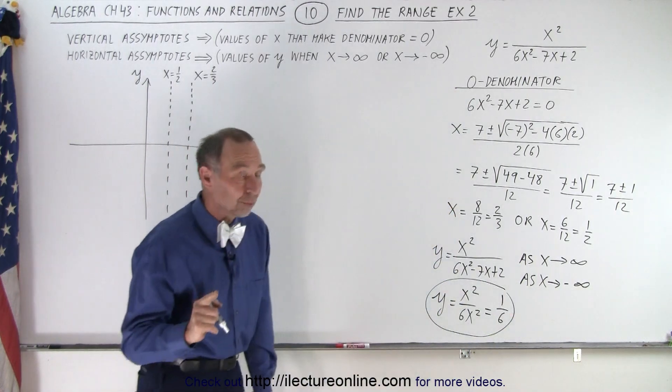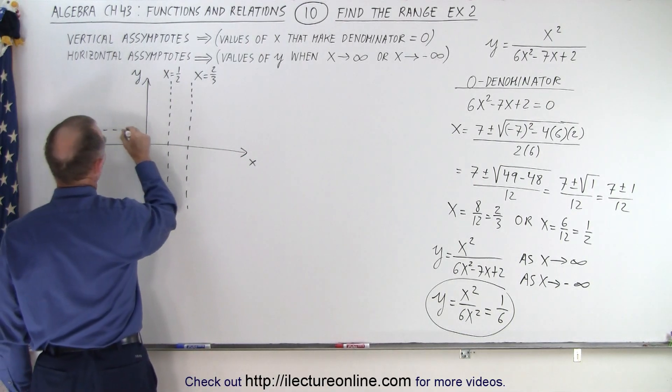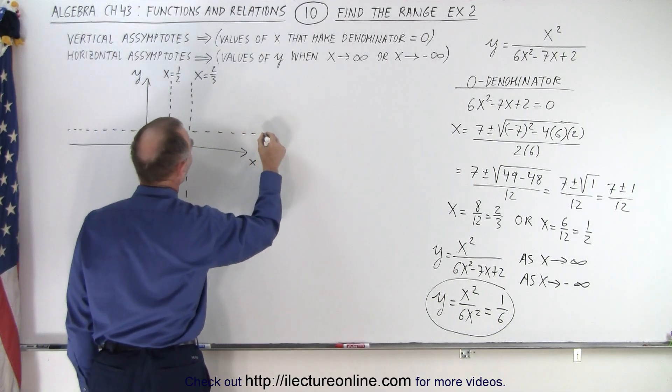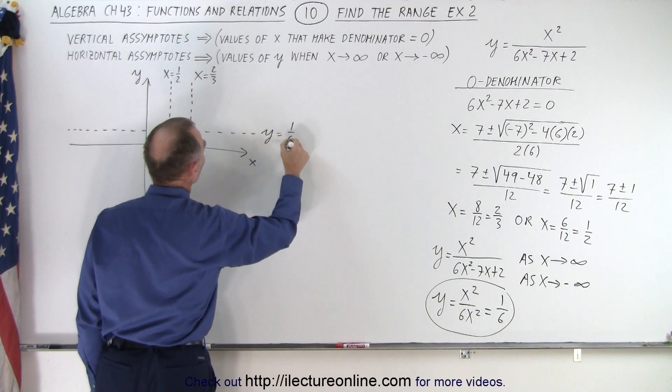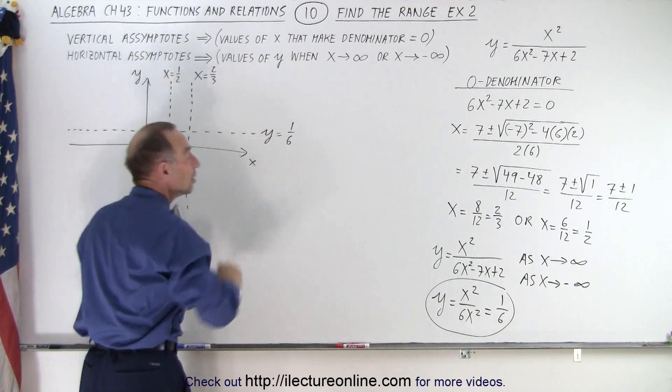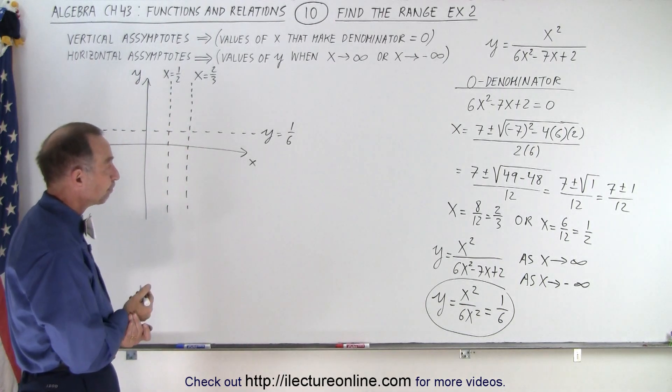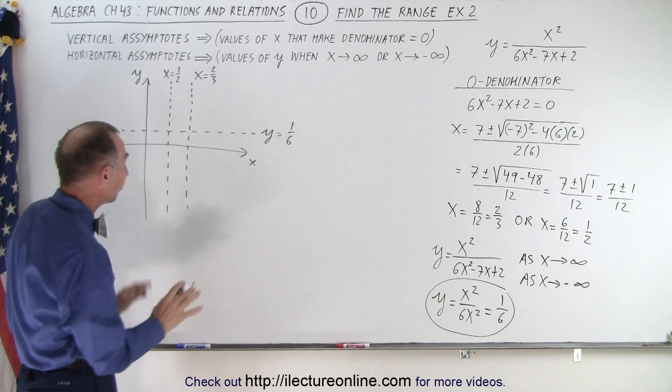So we know that we're going to have another asymptote, horizontal asymptote at this point, at y equals 1 sixth. So we'll go ahead and we'll draw another asymptote right here, and we go y equals 1 over 6. So this gives us 1, 2, 3, 4, 5, 6 regions on the graph that could potentially have part of the graph in it.